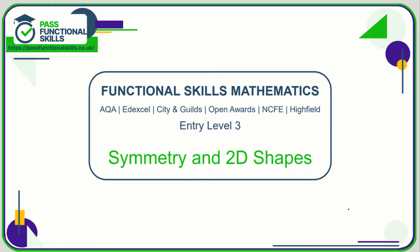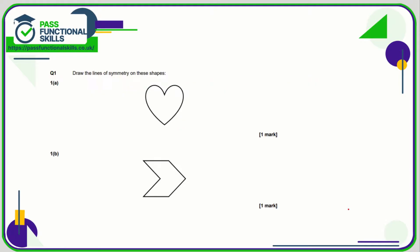Let's take a look at symmetry and 2D shapes. Question one: we need to draw a line of symmetry on the shapes. On the heart, the only line of symmetry is down the middle. Just imagine you were folding it — could you fold it so that one side sits perfectly on the other? In this case the right-hand side would sit on the left-hand side.